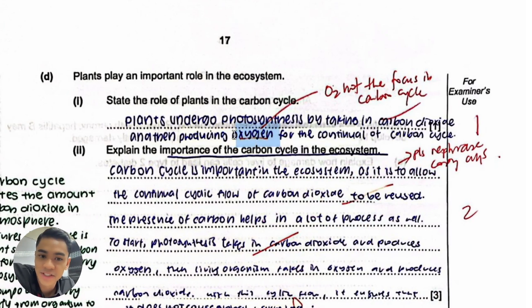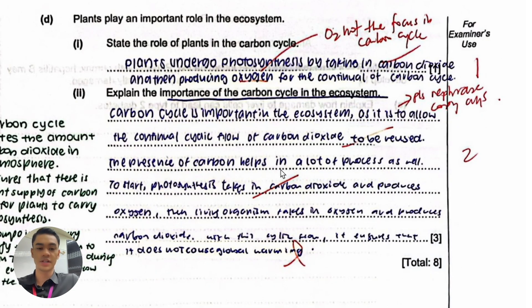This one is not answering the question again. You're talking about oxygen when they ask about carbon cycle. We're talking about how carbon moves throughout the ecosystem, not oxygen. Then this one was a content point missed out, that's why you didn't get three full marks. Why is it important in the ecosystem? Do not cause global warming is like a side point that's true, but it's not a main focus in the syllabus for answering this kind of question.